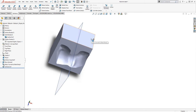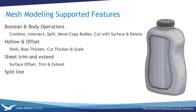Let's look at all the operations that can be performed currently on these mesh models. We can do boolean type operations: combine, intersect, and subtract. We can do split command, and also trimming of surfaces. We can use the Move/Copy Bodies command to translate and rotate these bodies. Cut with surface, delete face — we can shell and thicken. We also have offset surface, extend surface, and split line. There's really quite a lot you can do, and I expect this feature list to expand.